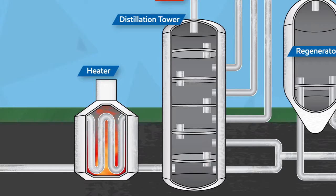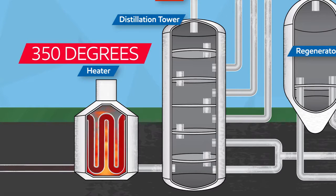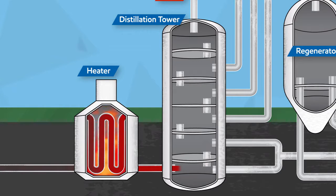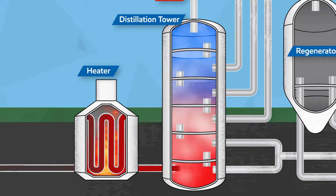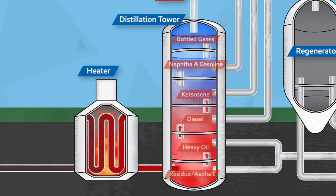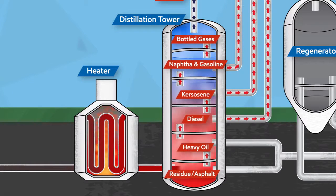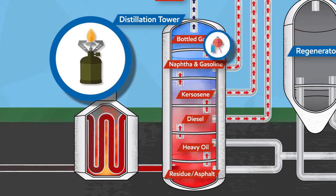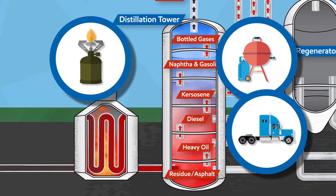Distillation separates the molecules into various components by heating the crude oil up to 350 degrees Celsius as it enters the distillation tower and turning it into a vapor. As the vapor rises inside the tower, it cools and condenses into its various molecular components, which are captured and processed into different products such as butane, propane, diesel fuels and jet fuels.